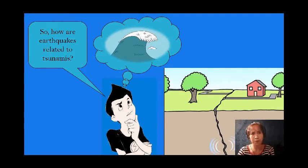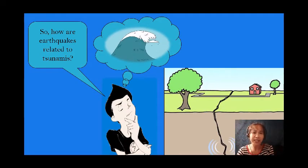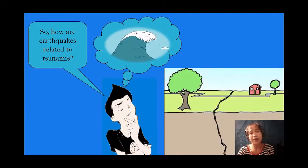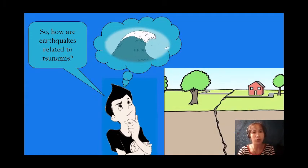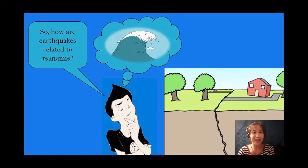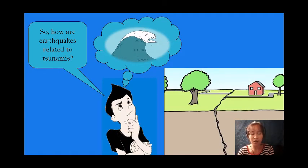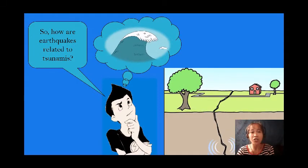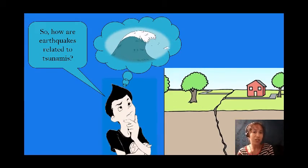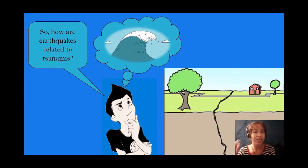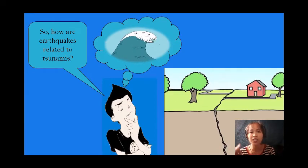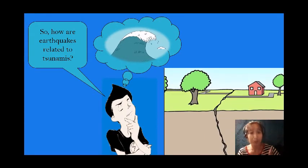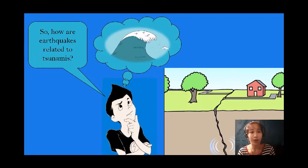How are earthquakes related to tsunamis? When a fault suddenly moves on land, you get an earthquake. But if a fault suddenly moves in or near a body of water, you may get a tsunami in addition to the earthquake. That is their relationship.